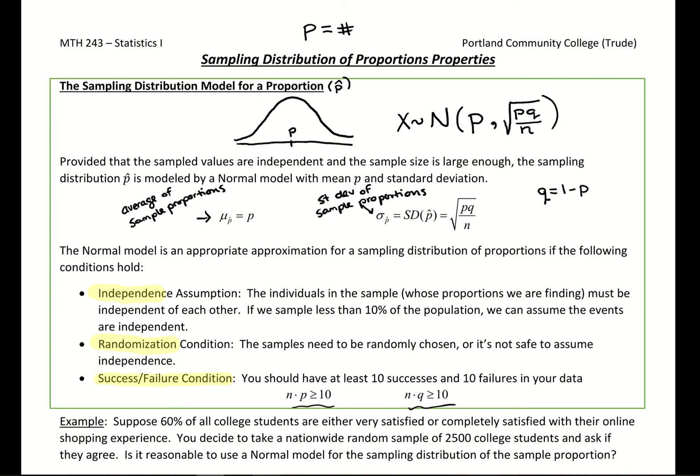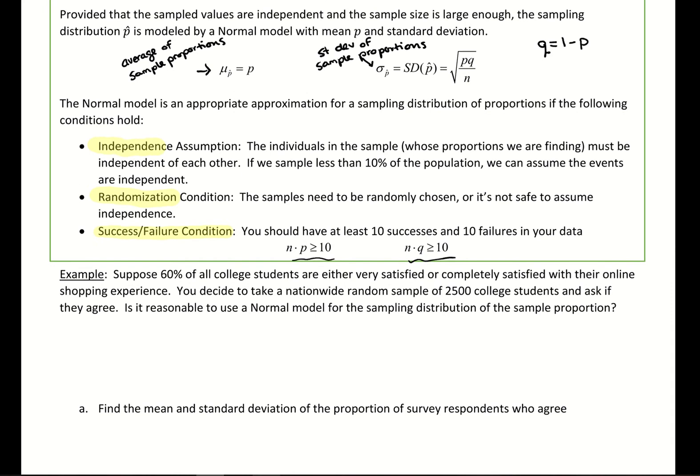So let's try an example here. Suppose 60% of college students are either very satisfied or completely satisfied with their online shopping experience. We decide to take a nationwide random sample of 2,500 college students and ask if they agree. Is it reasonable to use a normal model here? So the information they give us, here's that proportion that we need. So they have the 60% that they expect. We're taking a sample size of 2,500.